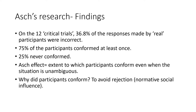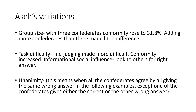Asch's variations: the first is group size. Asch found you need at least three confederates for conformity to rise — with three confederates and the real participant, conformity rises to 31.8%. Adding more confederates doesn't increase that percentage by much. So you need a majority of three, but adding beyond that makes little difference — the original study used six others and got 36.8%, which isn't much more than 31%.